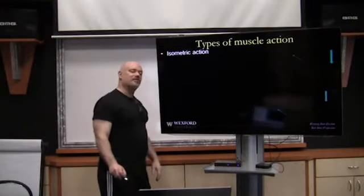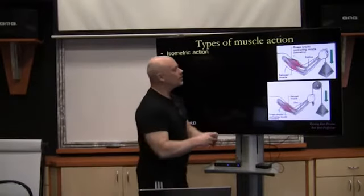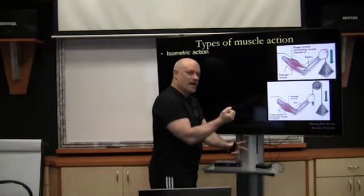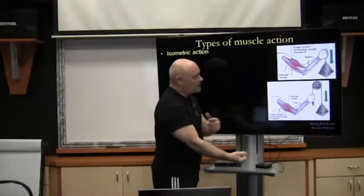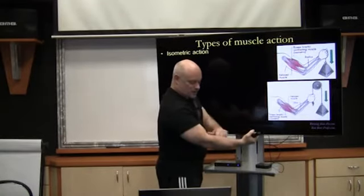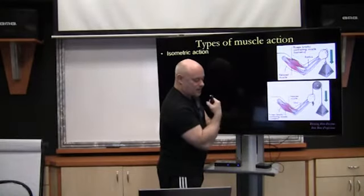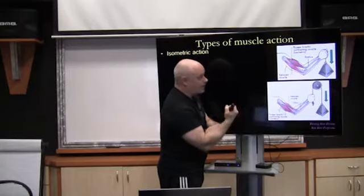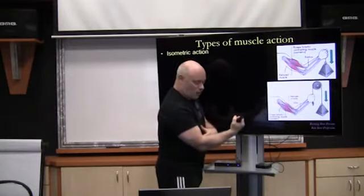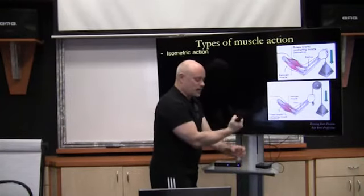Let's look at an isometric action first. If we've got a weight in our hand, the weight has a certain amount of mass and gravity is working on that to pull it down. But if we're holding it in that position, the muscle wants to fire and pull the forearm counterclockwise. So that muscle is going to fire, producing a certain amount of tension to offset the downward pull and just hold it there.